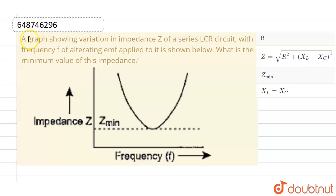Hello everyone, if we talk about this question, this given question is a graph showing variation in impedance Z of a series LCR circuit with frequency f of alternating EMF applied to it as shown in the below figure. What is the minimum value of impedance?